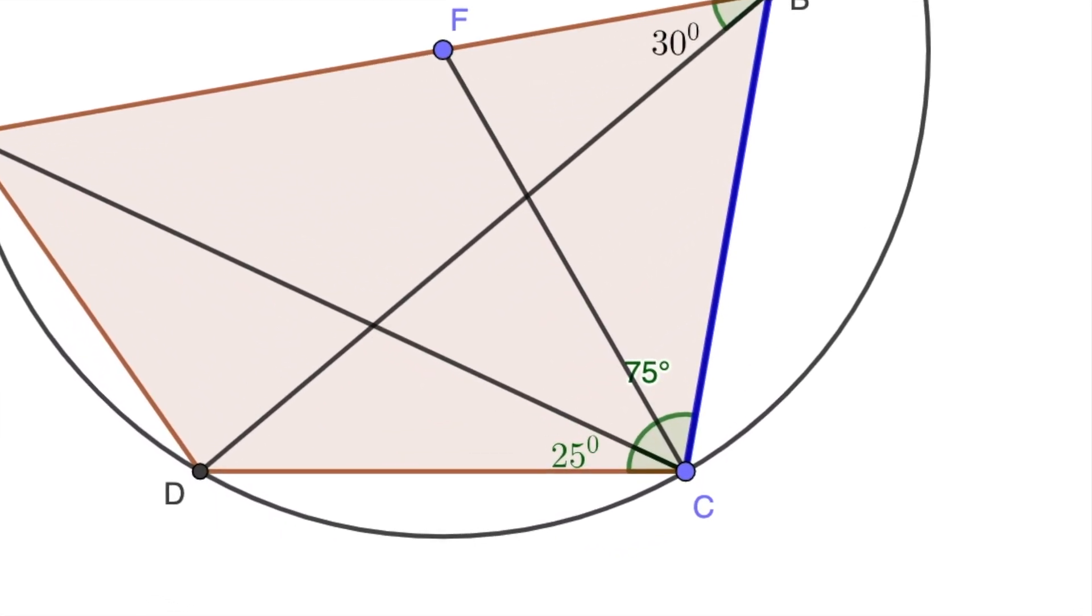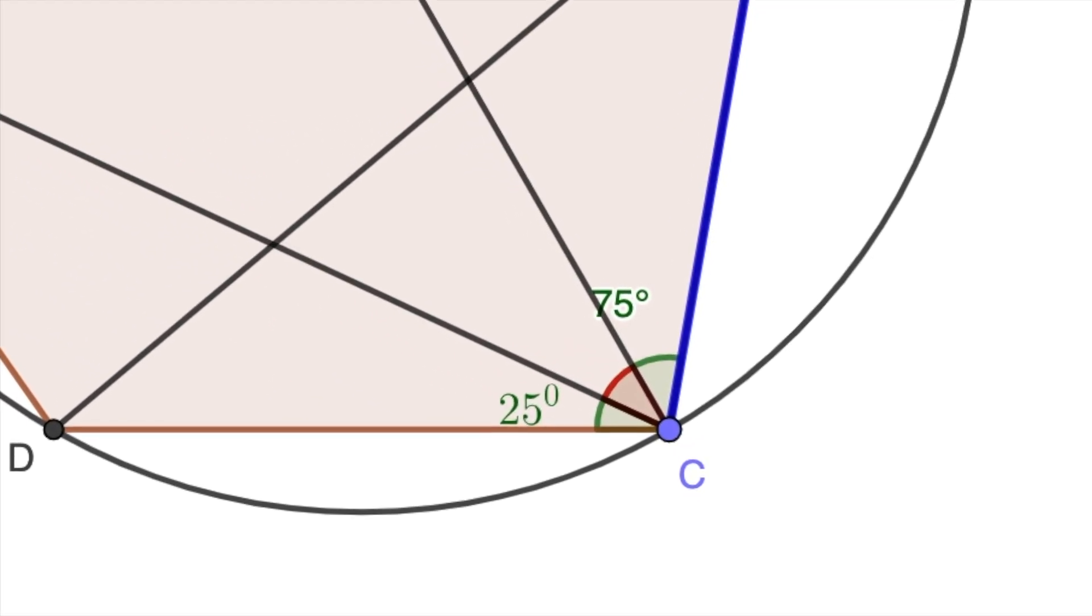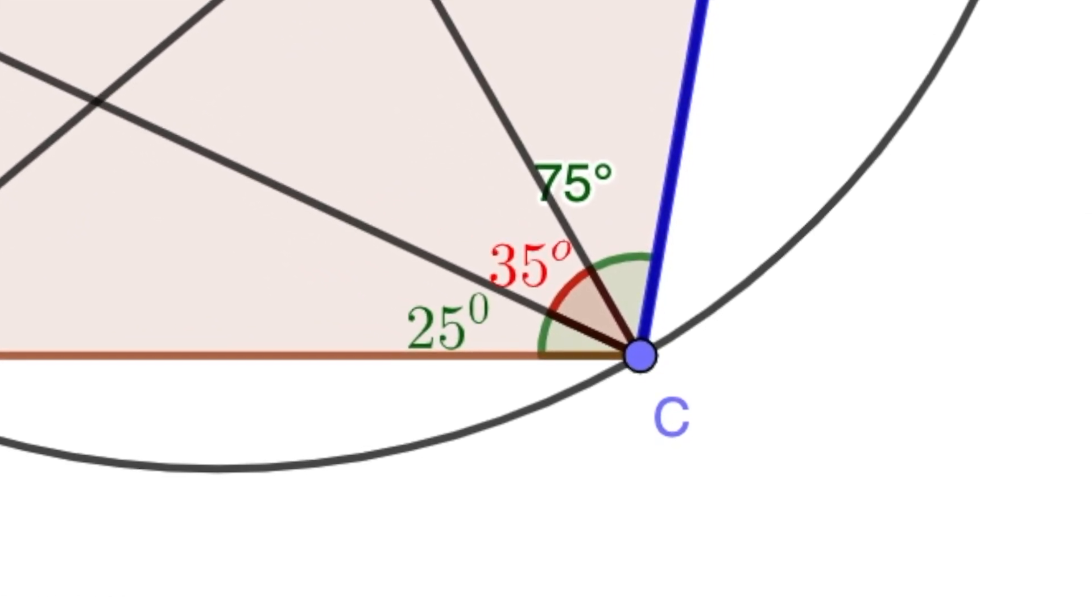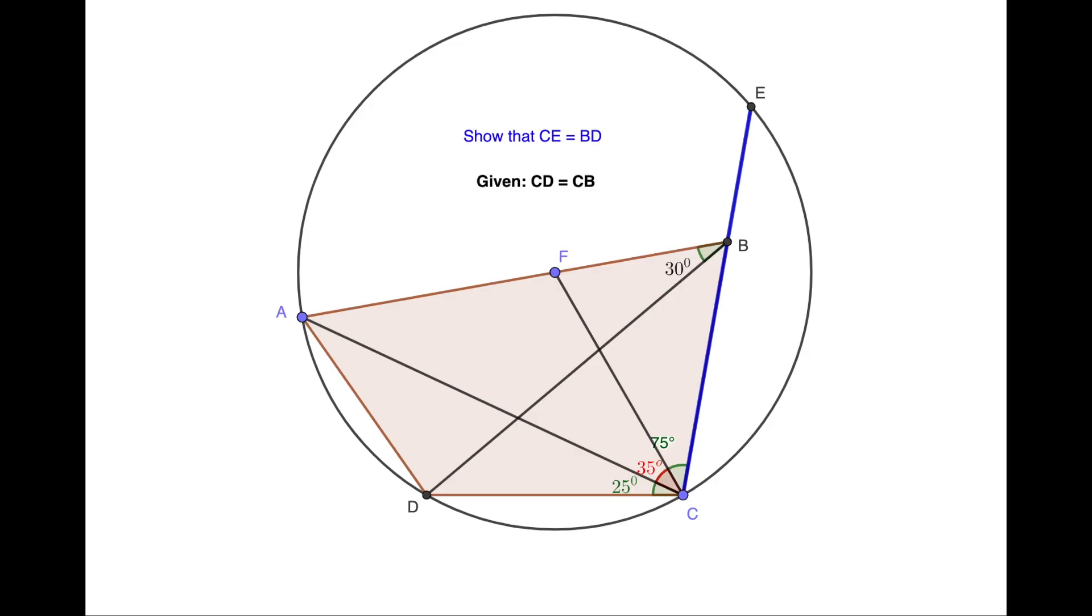Angle FCA is 35 degrees and join the segment FE. All you have to do is show that this green triangle FEC is congruent to the green triangle DBC. Give it a try and then you can proceed to the next part to watch the remaining solution.